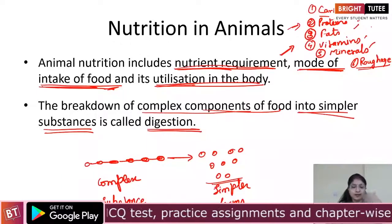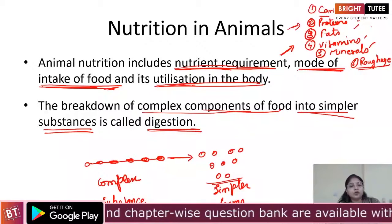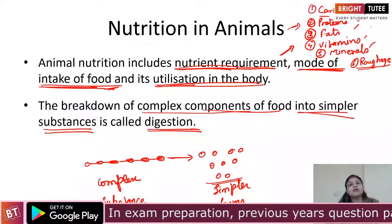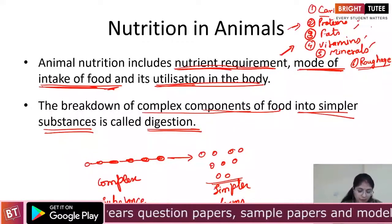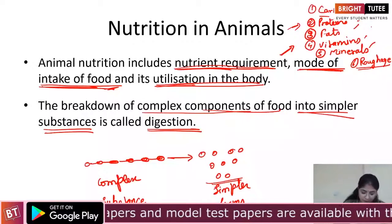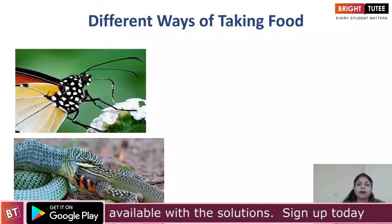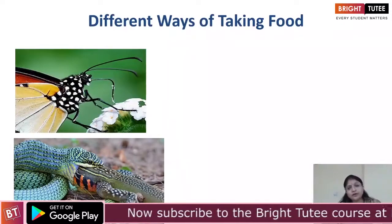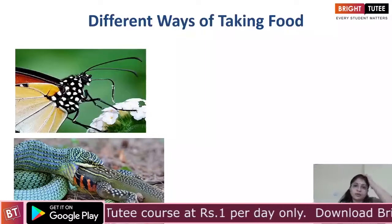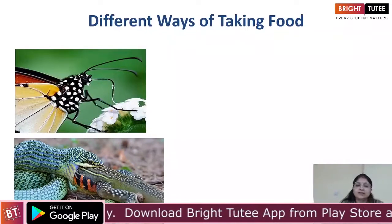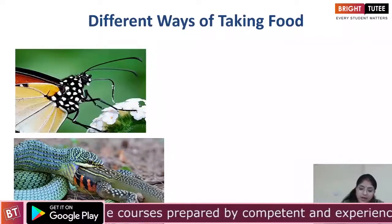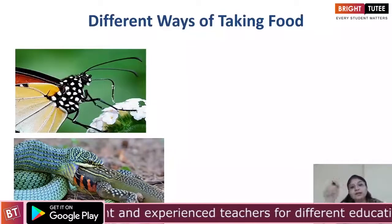When talking about the mode of intake of food — that is the first step, the beginning of nutrition — the first thing is to obtain the food. In human beings, for example, if there is an apple, you take it and bite it with your mouth. So your mode is biting and chewing. Different organisms have different ways in which they eat or obtain their food.